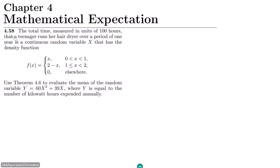This is question 4.58. The total time, measured in units of 100 hours, that a teenager runs her hair dryer over a period of one year is a continuous random variable x that has the density function f(x) equal to x for 0 < x < 1, and 2 minus x for 1 ≤ x < 2, and 0 elsewhere.